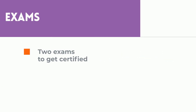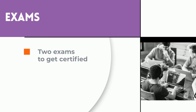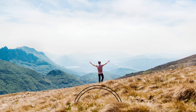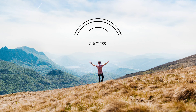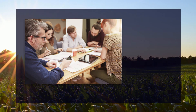You can take an exam after each part of the course is finished. Once both exams are passed, a student earns the CPIM designation. The exams can be taken in your area at the time of your choosing. After the exams are passed with good results, you are certified for five years.